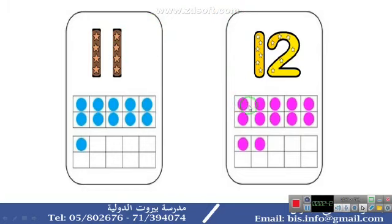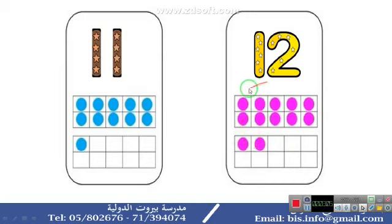Now let's count the circles in the frames: 1, 2, 3, 4, 5, 6, 7, 8, 9, 10 — move to the second frame — 11, 12. I put first 10 circles in the frame and then I add 2 more, so 12 is 10 and 2 more.